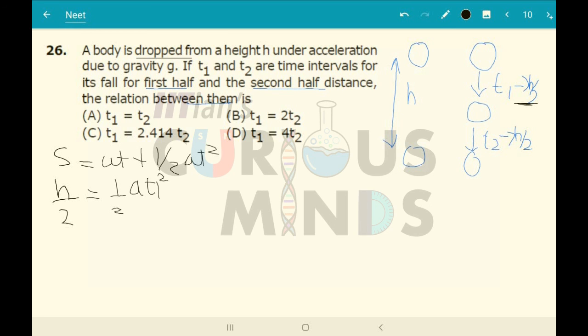If this is the time taken to travel h/2, we have to calculate the time to travel this another h/2. Now I will use the same formula s = ut + ½at².